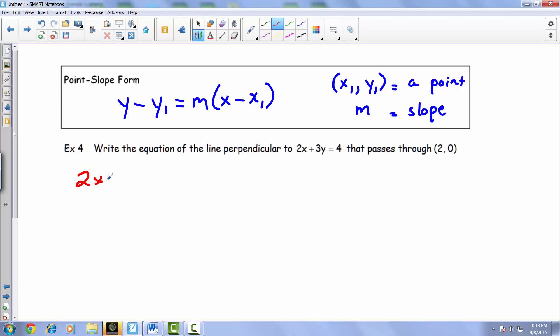We have 2x plus 3y equals 4. Let's find the slope of this. To find the slope, we have to put things into y equals mx plus b. We'll do that by subtracting 2x from both sides. We end up with 3y equals negative 2x plus 4. Dividing both sides by 3 to get y by itself, we end up with y equals negative two-thirds x plus four-thirds.